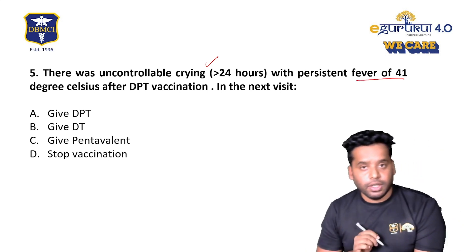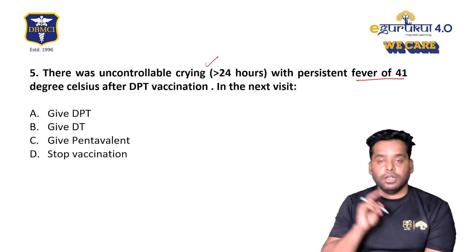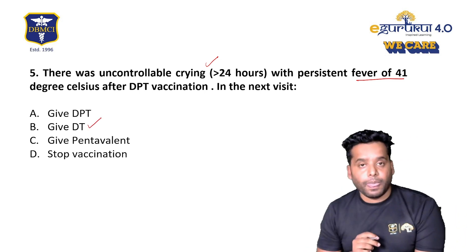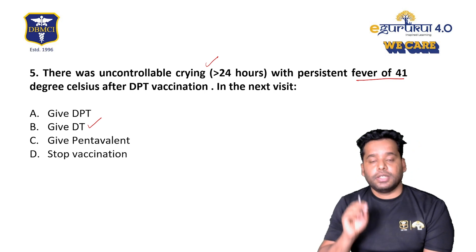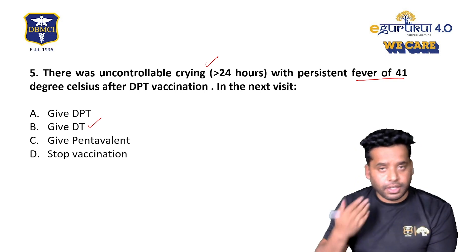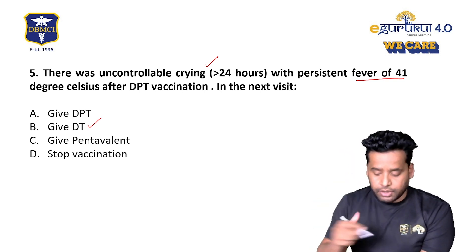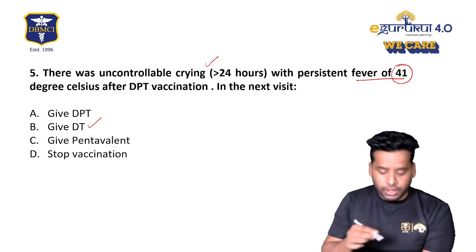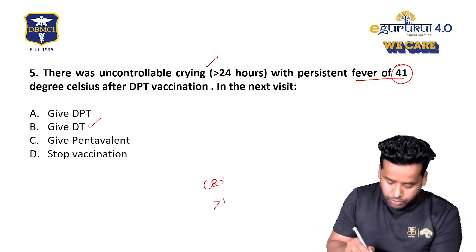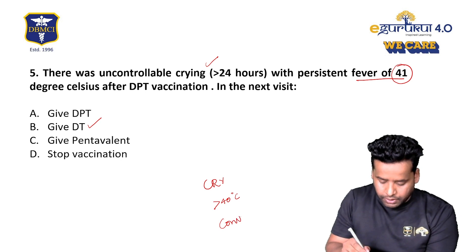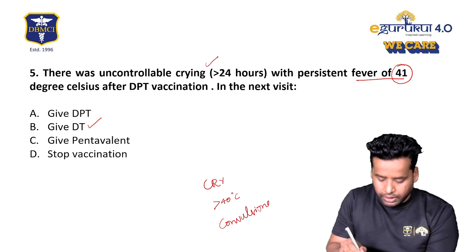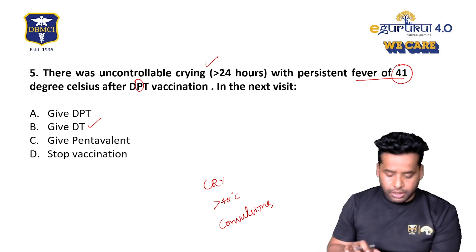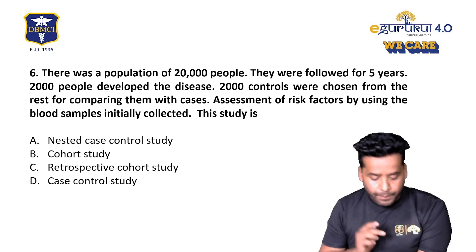A child with a history of persistent cry and fever more than 41°C — this is a contraindication for DPT in the future. In such cases you must give DT vaccine instead. Persistent cry, fever more than 40°C, and history of convulsions are all contraindications for the pertussis component. In this situation give DT, as clearly mentioned in Park's textbook.